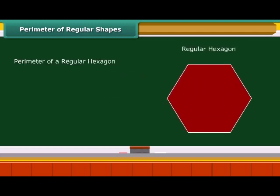The perimeter of a regular hexagon is 6 multiplied by its side. Suppose there is a regular hexagon of side 5 cm — then the perimeter of the regular hexagon is 6 multiplied by 5, which is 30 cm.